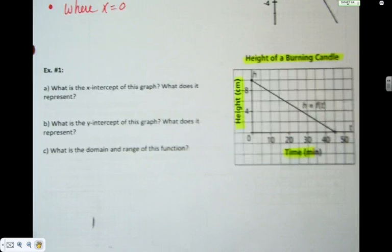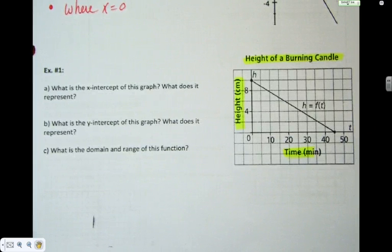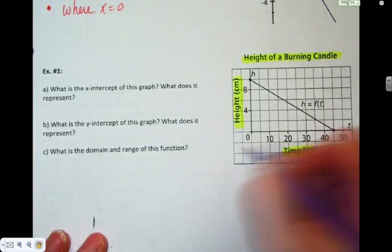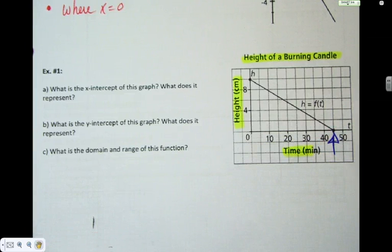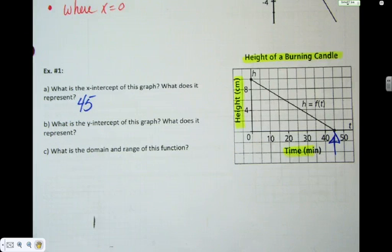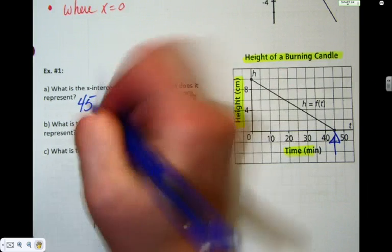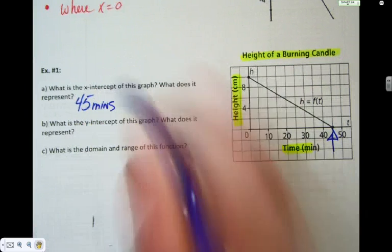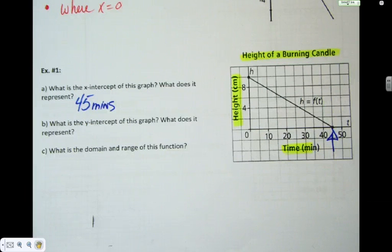Question A is, what is the x-intercept? What does it represent? X-intercept is wherever it cuts the x-axis, so you're coming along the graph, looking right there. Tell me, what is the value of the x-intercept? 45. Give me some units. Minutes.